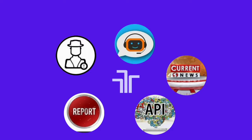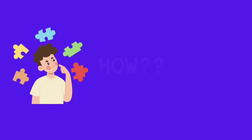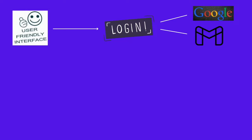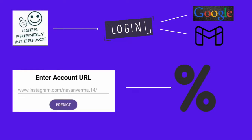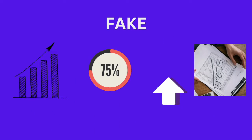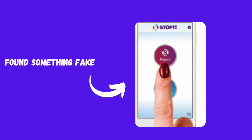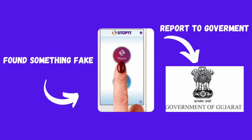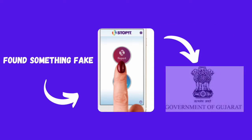One might wonder how it is going to work. Keeping user friendliness in mind, the platform is going to ask the user to login through Google or Gmail. Once the user logs in, they will be asked to provide the link of the account that looks suspicious. The user will be provided with details like the chances of the profile being fake, given in the form of a percentage. The higher the percentage, the more the probability of the account being fake. Users will get the option to report the account, and the reported account will be forwarded to the government authority.